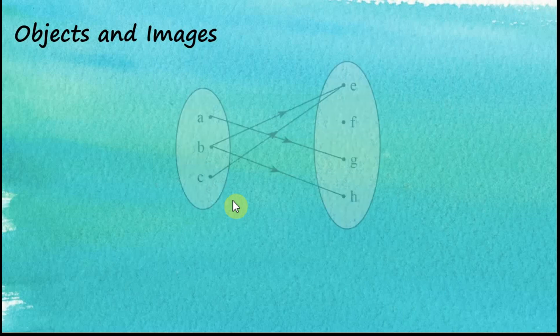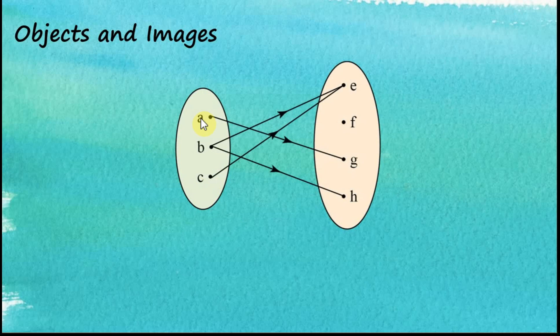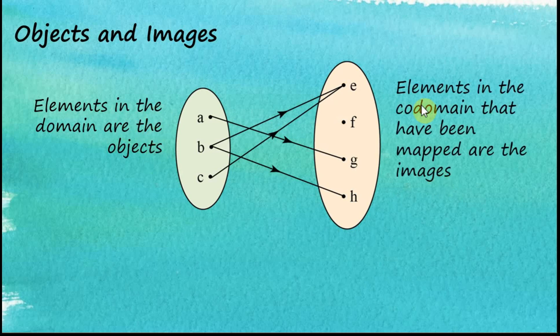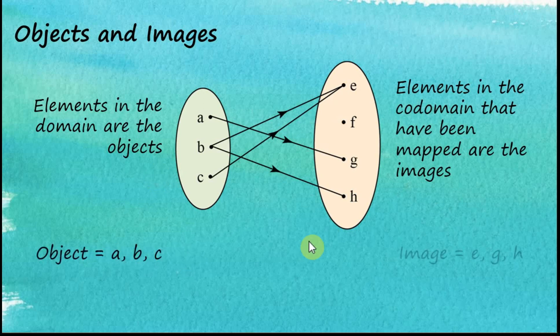Objects and images. We have two sets: the first set has A, B, C, and the second set has E, F, G, H. Elements in the domain are the objects. Elements in the co-domain that have been mapped are the images. So the objects are A, B, C, and the images are E, G, and H. Note that F is not an image because no object is mapped to F.